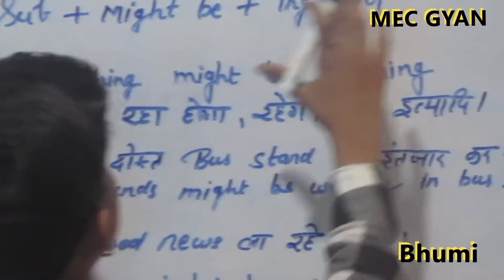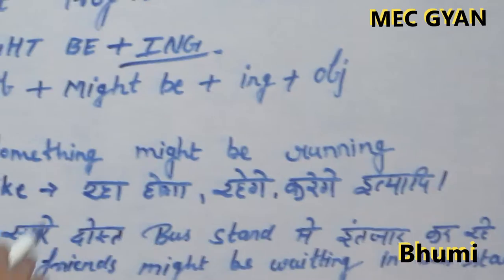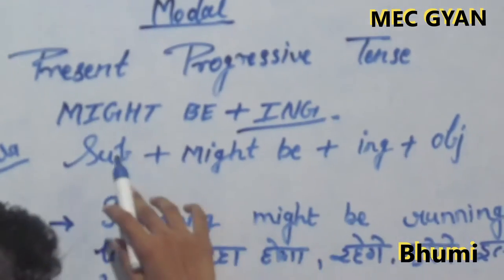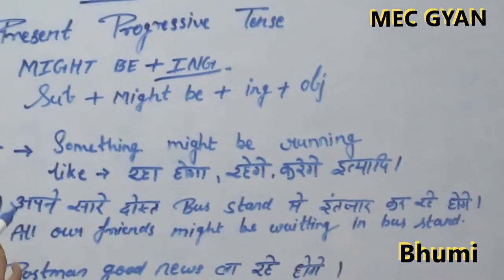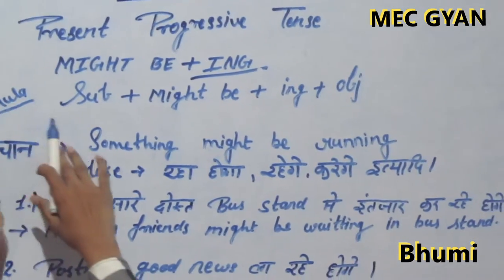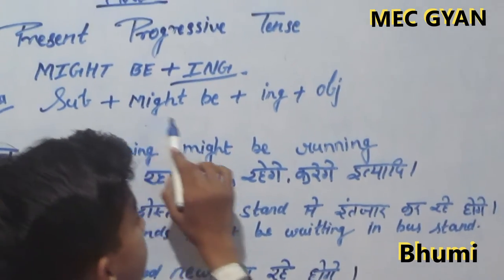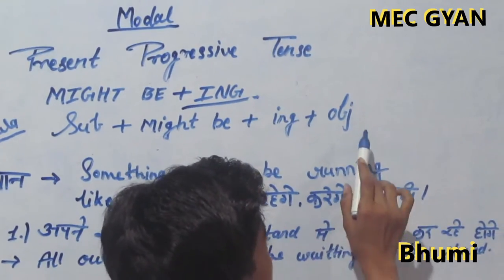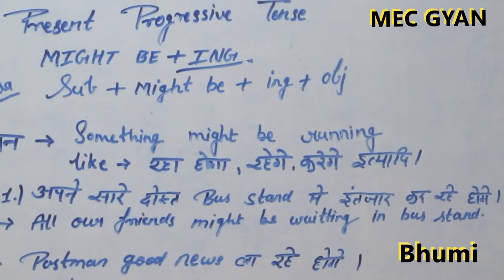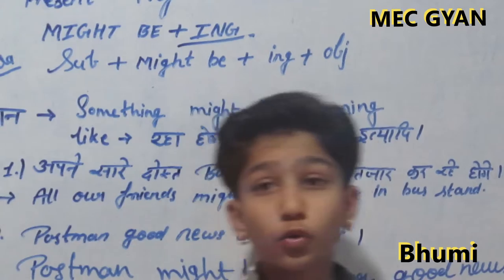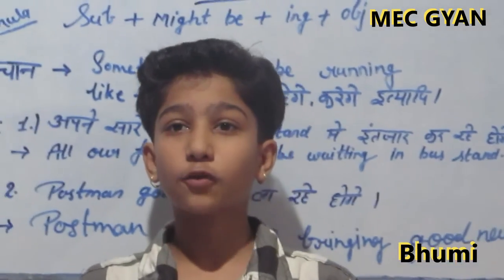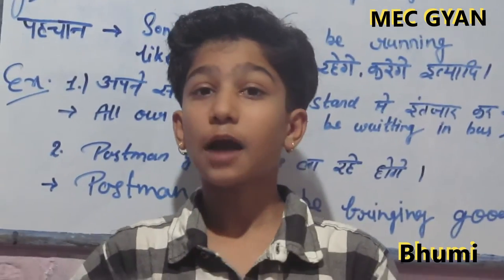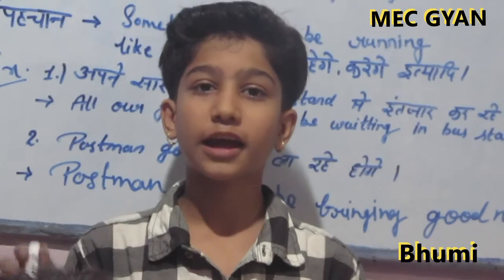The present progressive tense formula is: subject plus might be plus ing plus object. We use this in situations where we are uncertain, such as in daily conversations when we don't know what is going to happen.